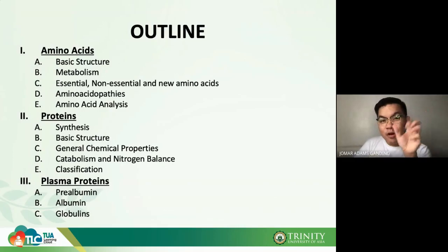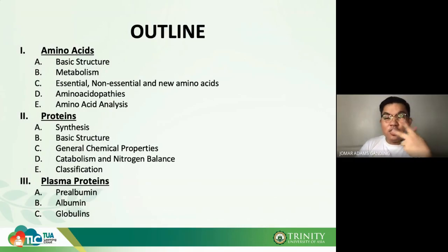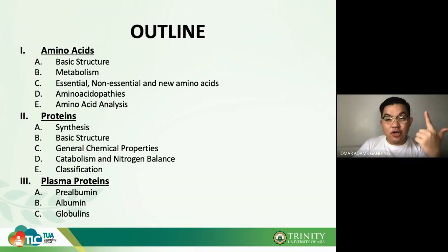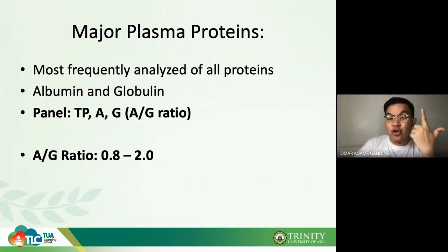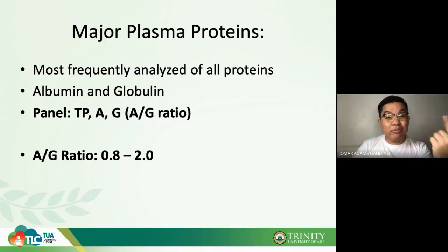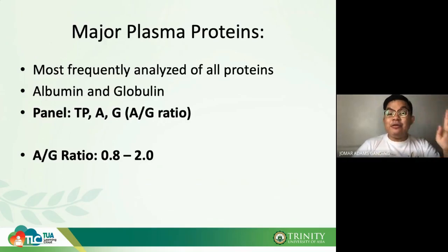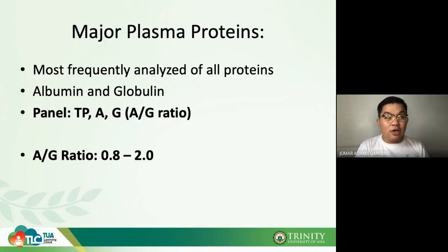The two major types of plasma proteins are albumin and globulin. They are the most frequently analyzed of all proteins because they are the major divisions of plasma protein. We have a test called the total protein panel — T-PAD — where we measure total protein, albumin, globulin, and the albumin-to-globulin ratio.